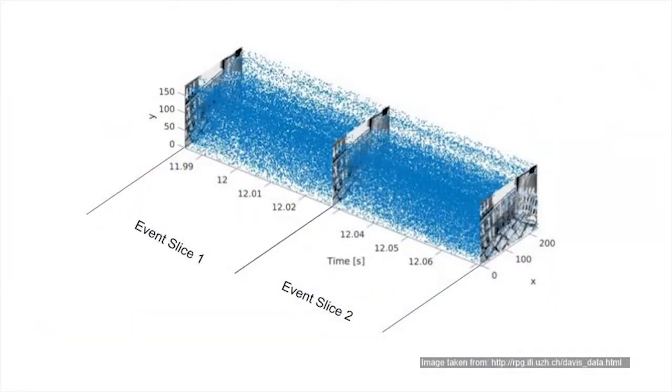Input to our neural network are the events within a small time interval, which we call event slices, and which are represented as three 2D arrays. These arrays encode the number of positive events, the number of negative events, and the average timestamp at each point.